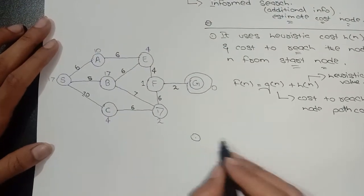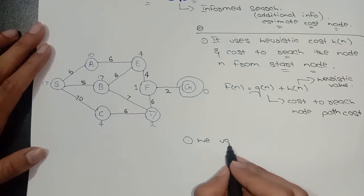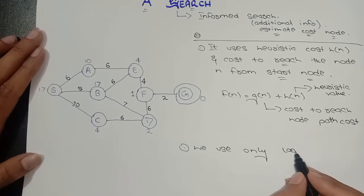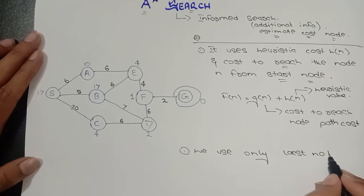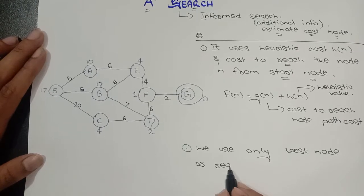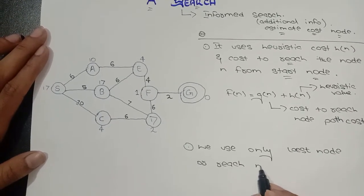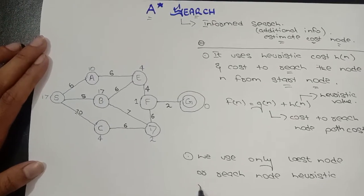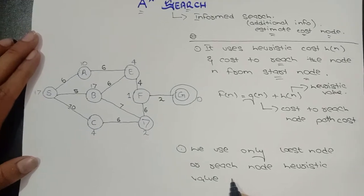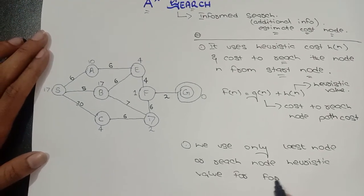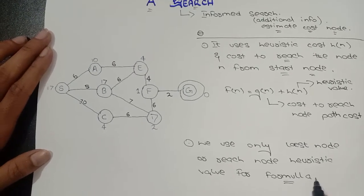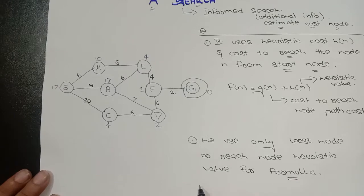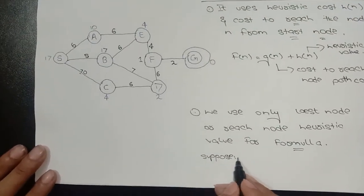This is a very important point we will use in our calculation: we use only the last node, or you can say reach node — where we want to reach from one node to a second node. So in the formula, h of n will only be considered for the last node or reach node heuristic value.